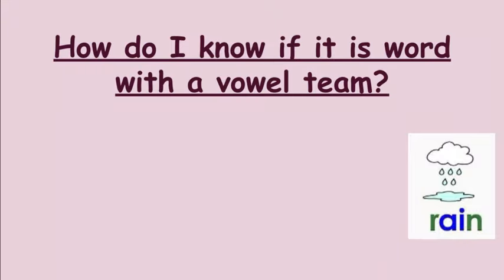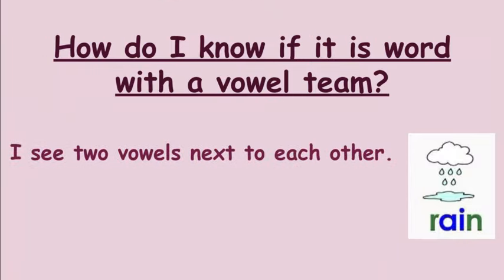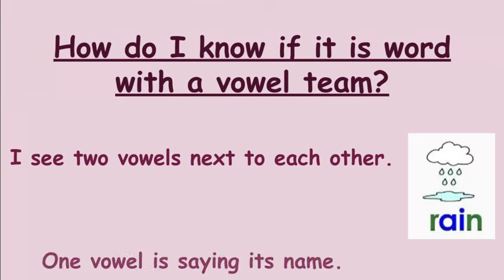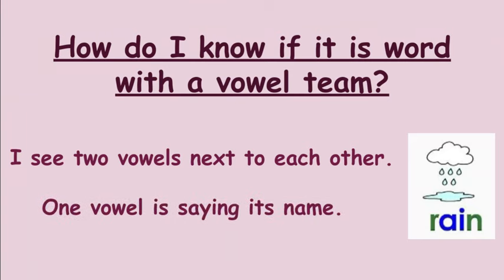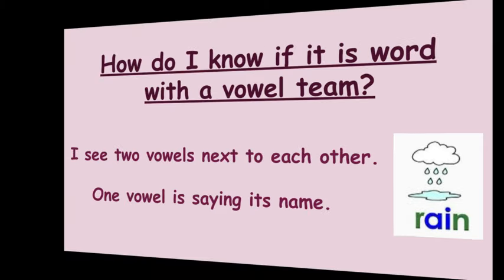So how do I know if it's a word with a vowel team? First, I'm going to see two vowels next to each other, and one of the vowels is saying its name — that means it's the long vowel sound: I, A, O, or E.